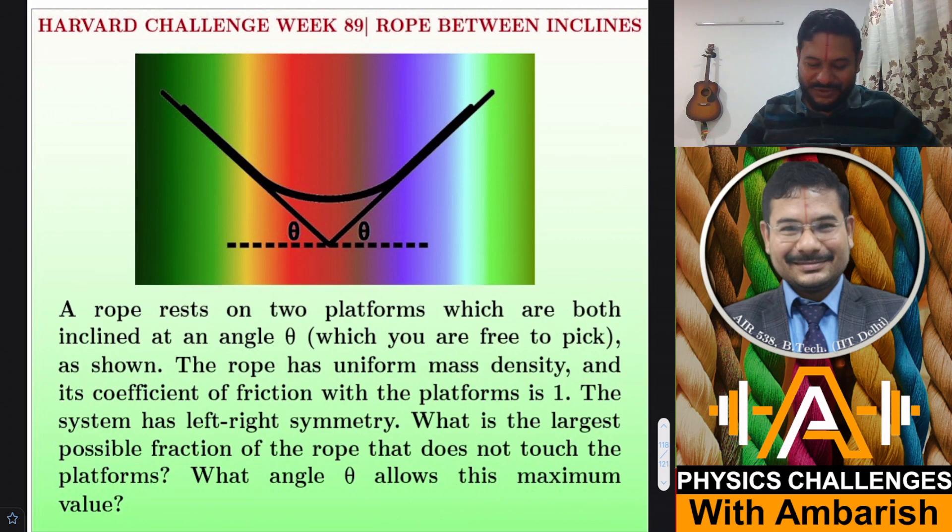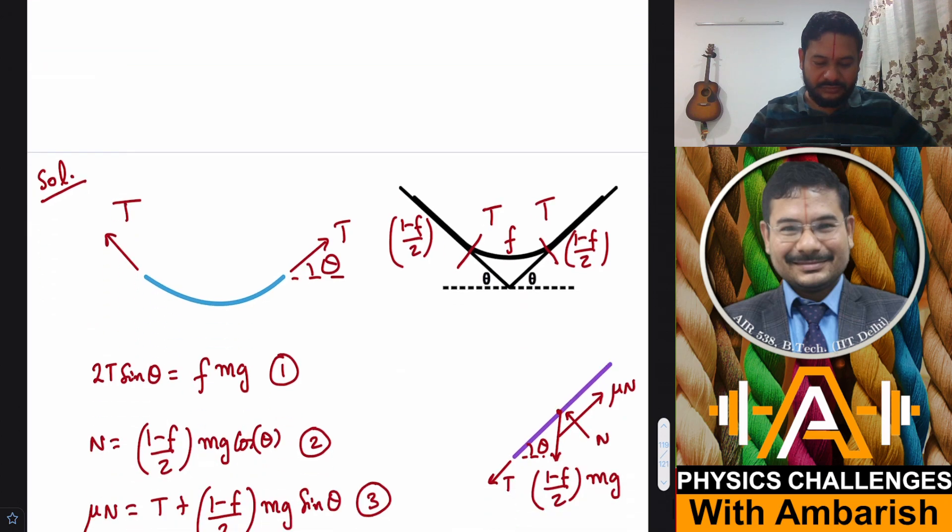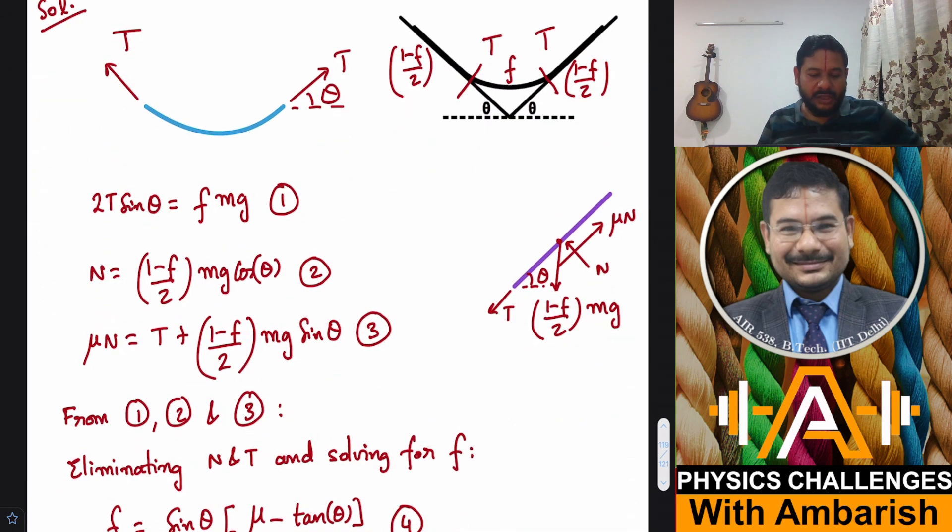You can give it a try. I'll get into the solution right away. I'm making the free body diagram of this part. Let's say this fraction is f, so total is unity. Out of this, this fraction is f and accordingly by symmetry this is 1 minus f upon 2 and this is also 1 minus f upon 2, because everything should add up to 1.